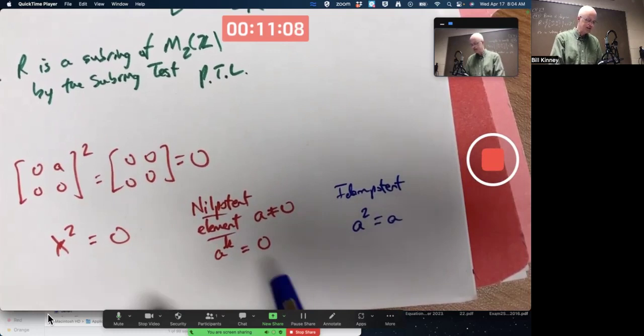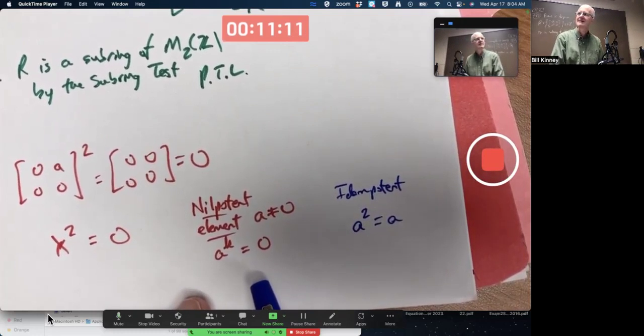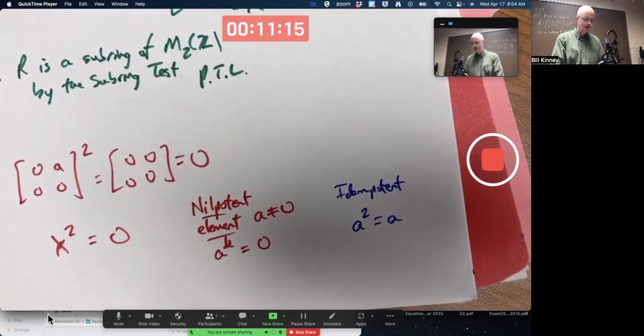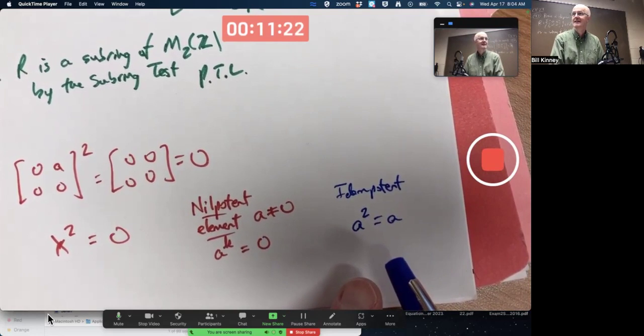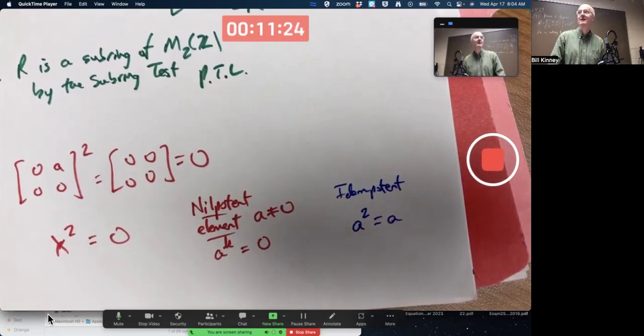I suppose you could say zero is nilpotent as well, but we're mostly interested in non-zero nilpotent elements. Zero would be idempotent as well, but we're mostly interested in non-zero idempotents. We're also mostly interested in idempotents if they exist that are not the unity one, the multiplicative identity if it exists.